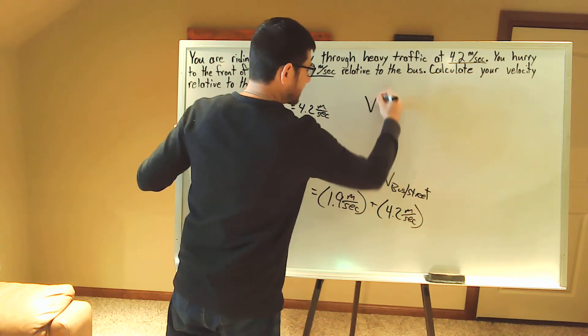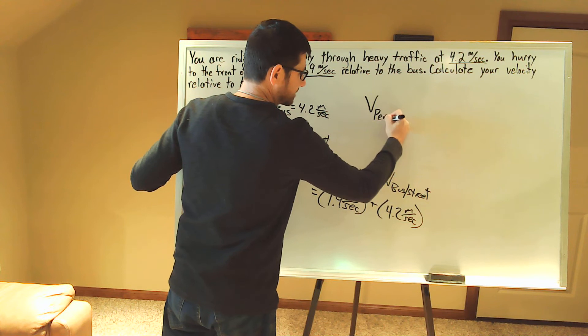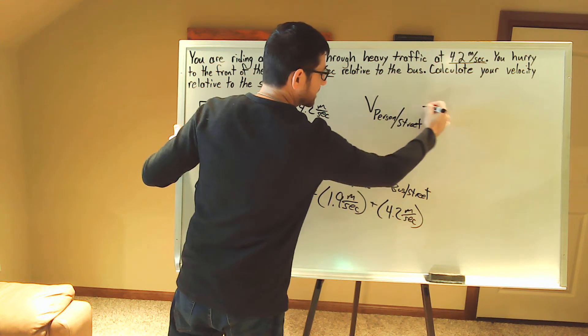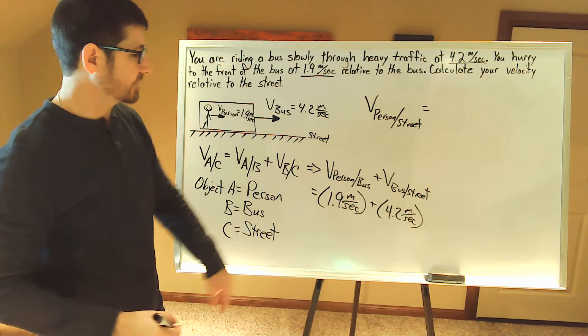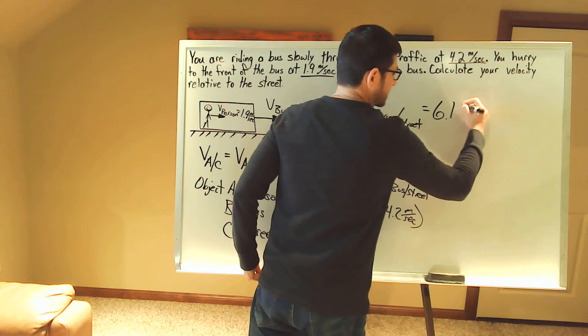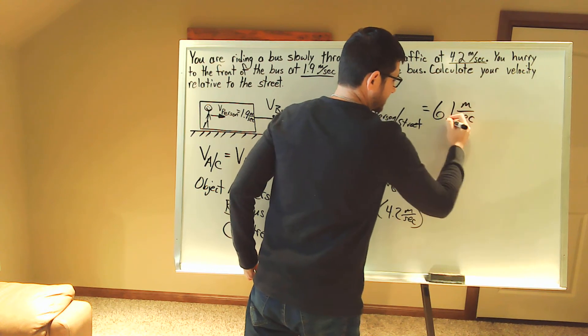So the velocity of the person relative to the street is going to be the sum of these two values, which is 6.1 meters per second.